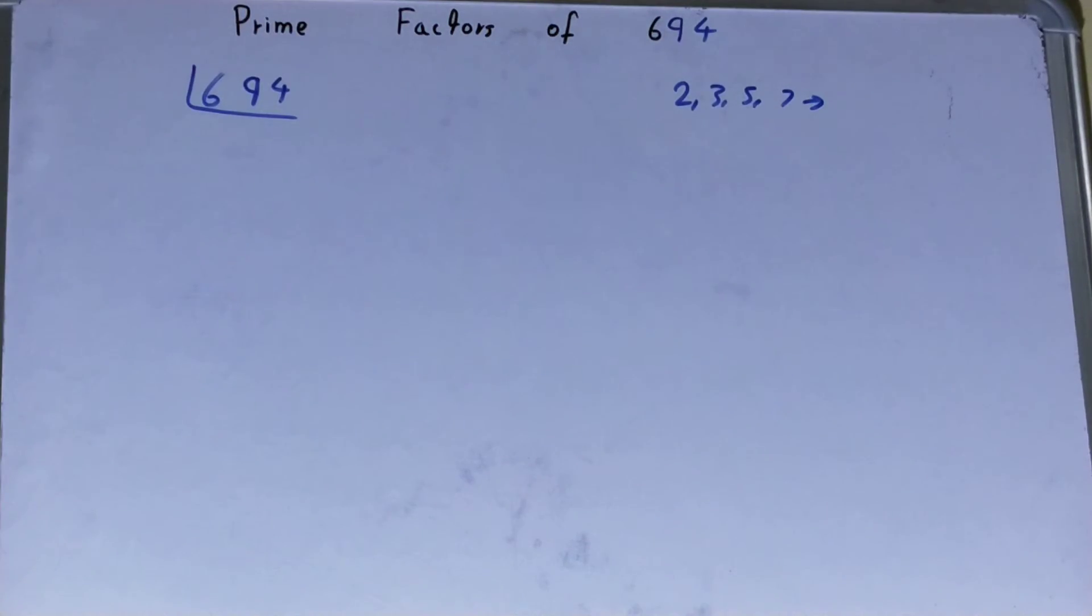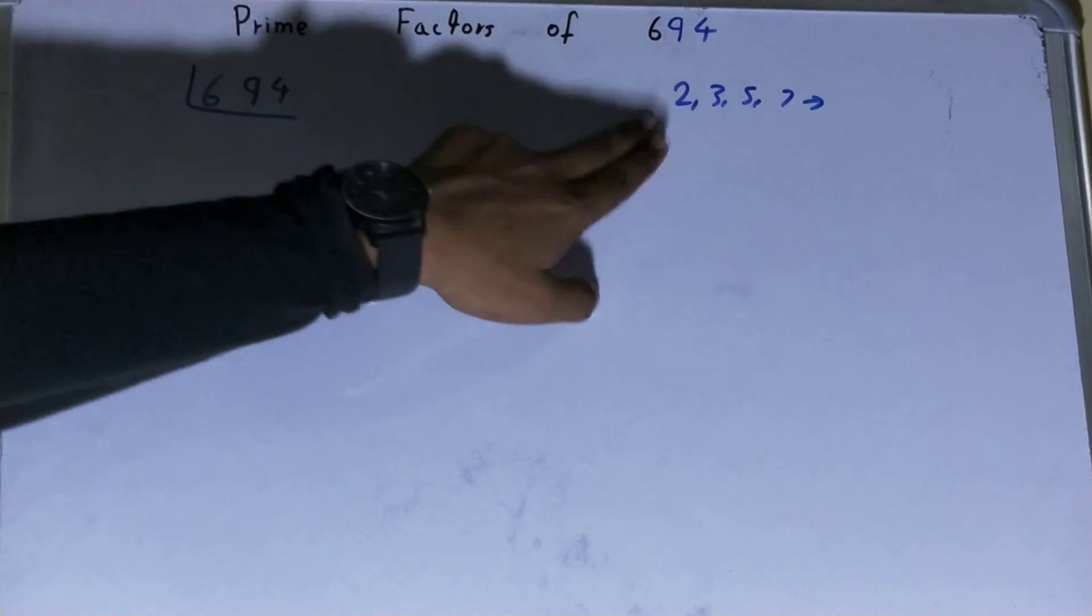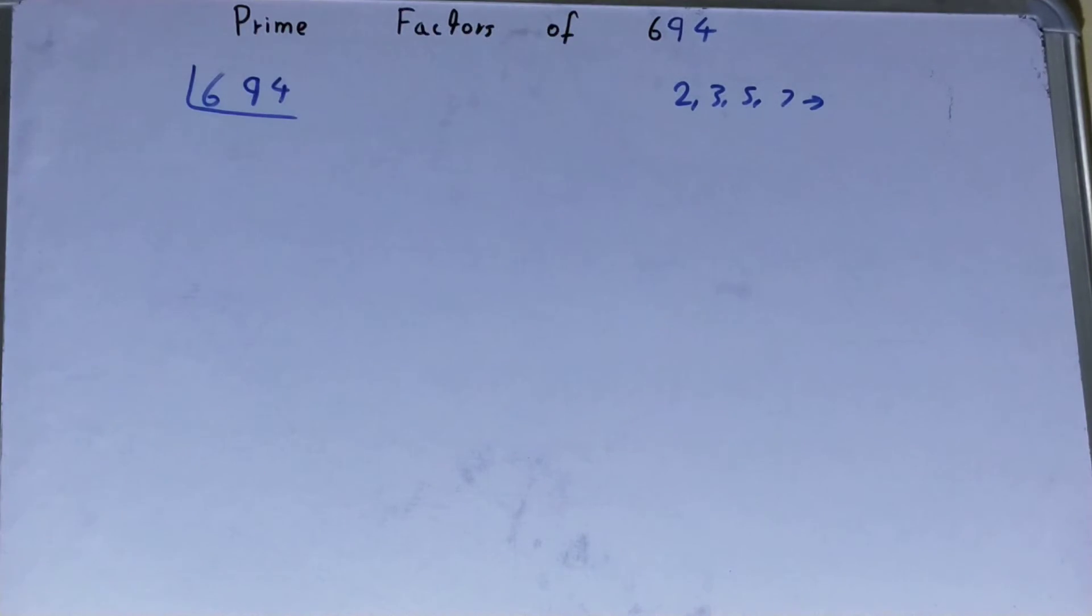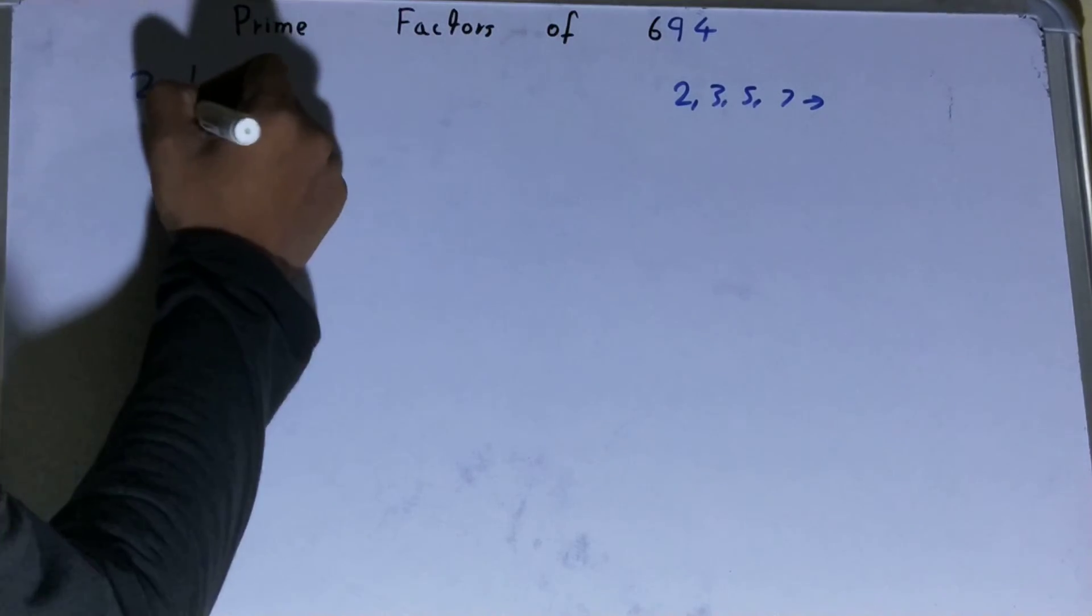All right, so we'll be starting with the lowest prime number we have, that is 2. Is the number 694 divisible by 2? Yes it is, because 694 is even. So divide it and you will be left with 347.